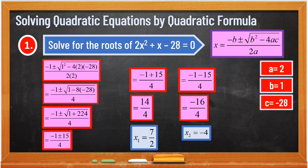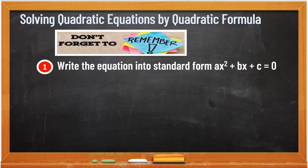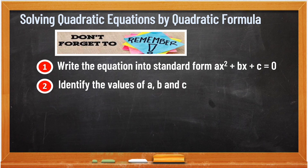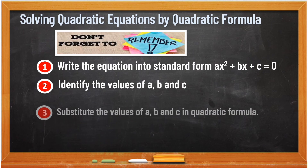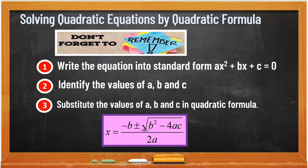So that's how easy the quadratic formula is. We just need to be careful and solve step by step. Let's sum up the steps: first, write the equation into standard form. After that, identify the values of A, B, and C. And lastly, substitute the values of A, B, and C in the quadratic formula: negative B plus minus the square root of B squared minus 4AC over 2A. First solve the squared term and what's inside the radical sign, then simplify the rest. Apply PEMDAS and be careful.